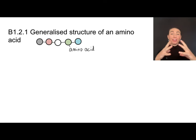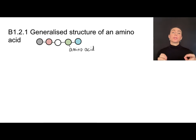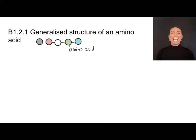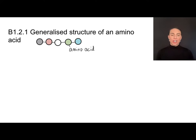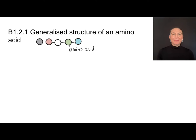Proteins are generally long chains made of monomers called amino acids. There are 20 different types of amino acids, but they all have a general structure that you should know how to draw. So let's do that together.